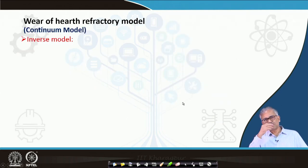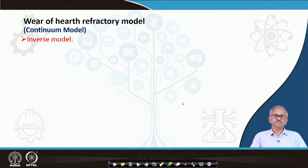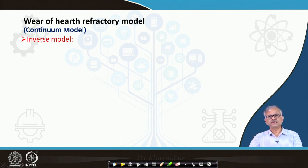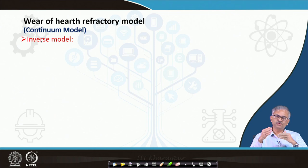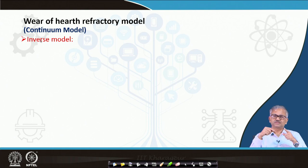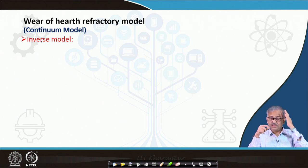Now I will give some examples of modeling. First we start with the wear of hearth refractory model, based on the continuum model — it is called the inverse model. An inverse model basically means you want to predict some input condition based on the output condition. By matching the output condition — suppose you have experimental and predicted output — if they are not matching, you apply some optimization tool to fit the input condition such that experimental and model outputs match perfectly. Based on the output you can predict the input — that is called the inverse model.